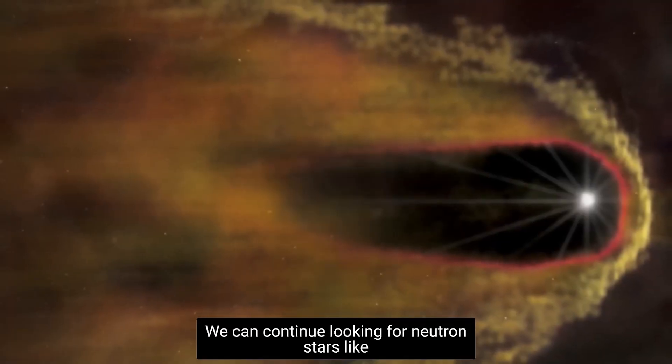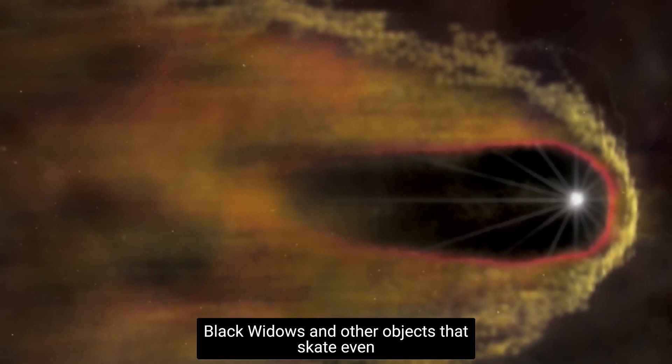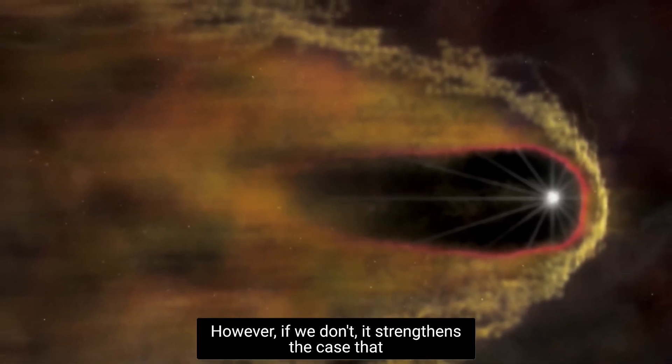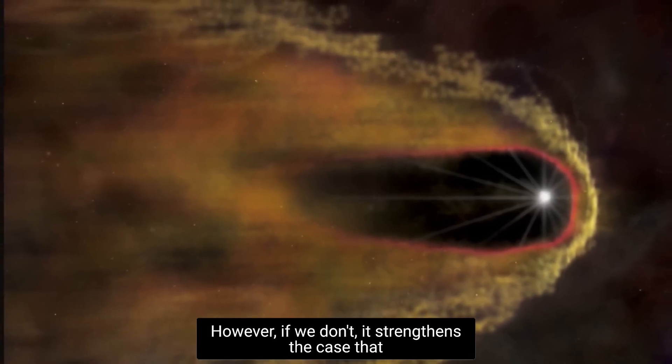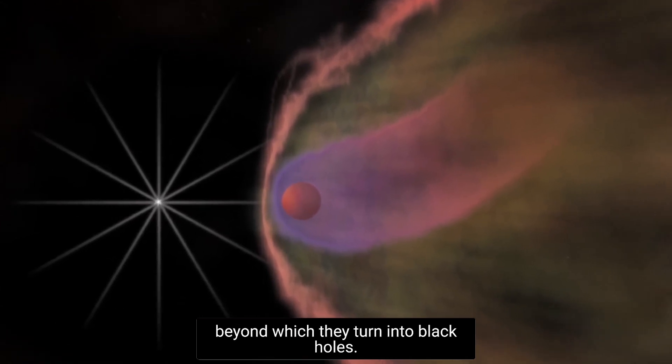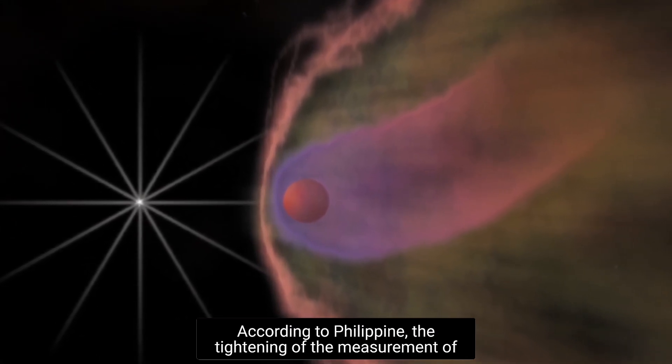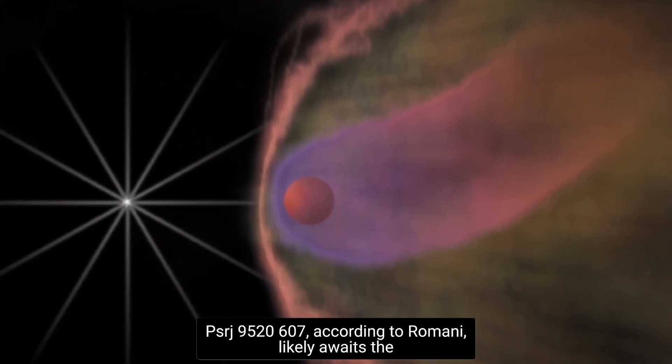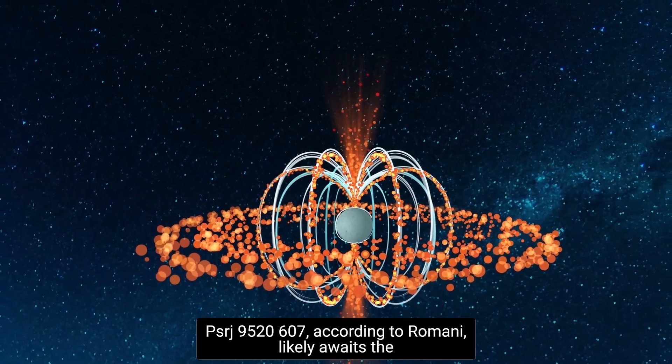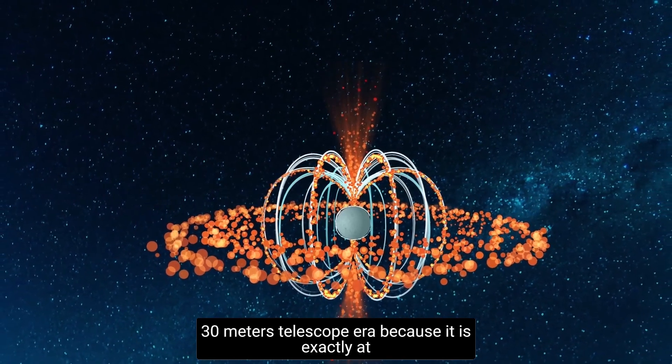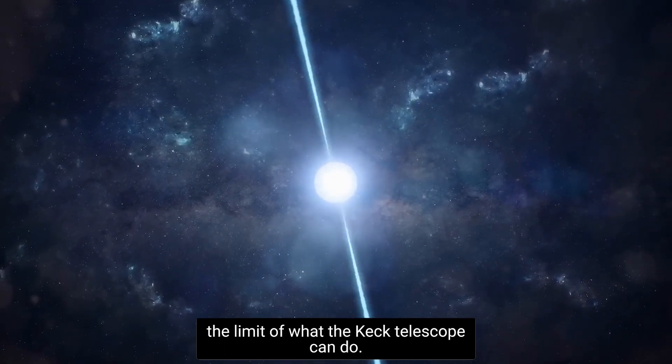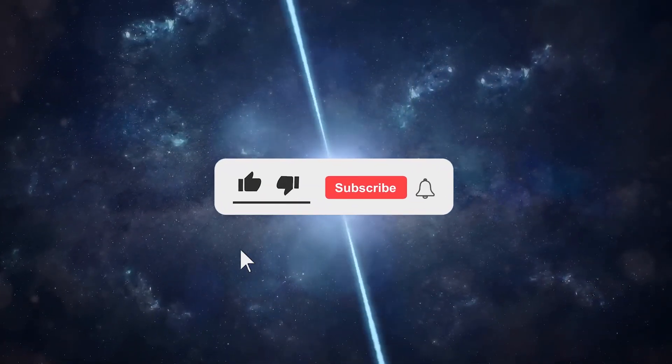We can continue looking for neutron stars like black widows and other objects that skate even closer to the edge of a black hole. However, if we don't, it strengthens the case that 2.3 solar masses is the actual upper limit, beyond which they turn into black holes, according to Filippenko. The tightening of the measurement of PSR J0952-0607, according to Romani, likely awaits the 30-meter telescope era, because it is exactly at the limit of what the Keck telescope can do.